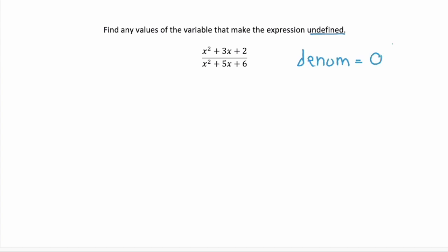Remember we can't divide by zero? So we're concerned with x squared plus 5x plus 6, our denominator for this expression, and we want to know when does it equal zero? Those would be the values of x that make this expression undefined.